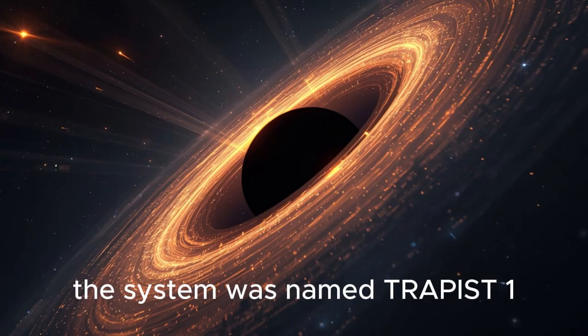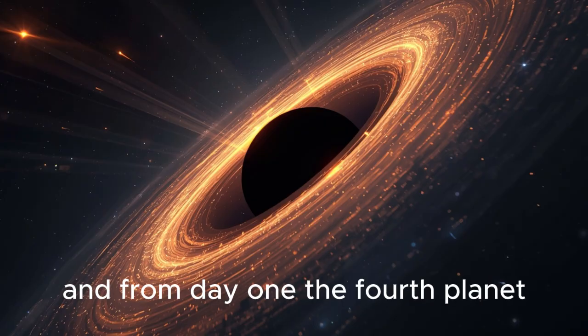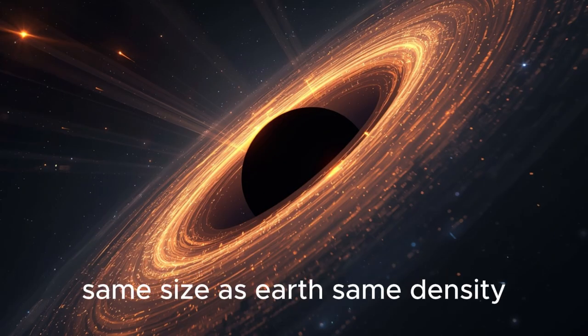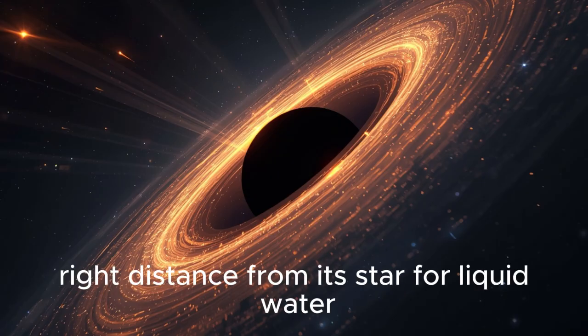The system was named TRAPPIST-1, and from day one, the fourth planet, TRAPPIST-1E, stood out as the most promising. Same size as Earth, same density, right distance from its star for liquid water.